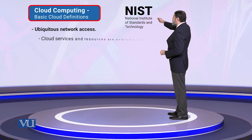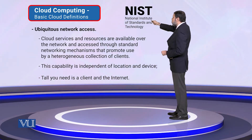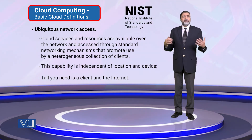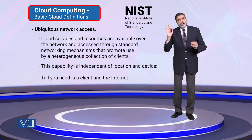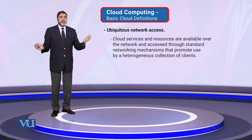Next, we have ubiquitous network access. Cloud services and resources are available over the network and accessed through standard networking mechanisms that promote use of a heterogeneous collection of clients. Resources are available over the network and accessed through standard networking. We need to use standard networking to access our external network resources. The basic networking protocols and mechanisms will remain, supporting a heterogeneous collection of clients.